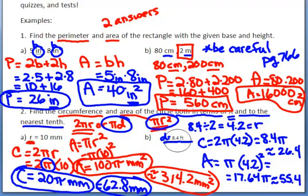Don't forget your labels. For circumference it's a regular single unit — feet. For area it's feet squared. And you're done with these answers.